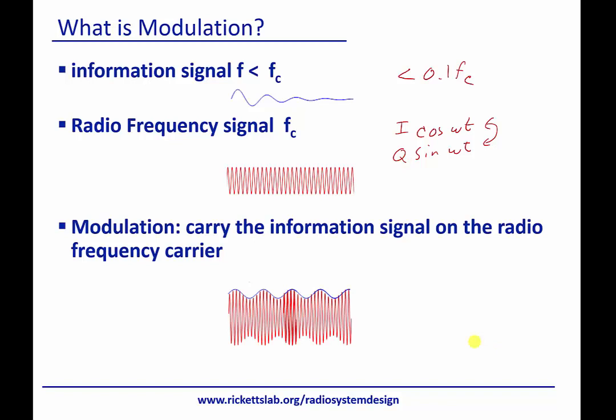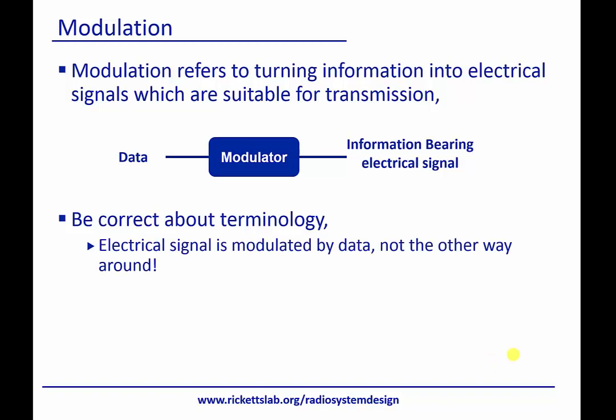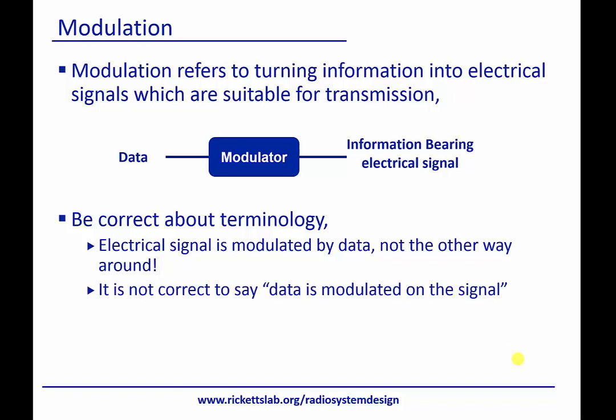The basic idea of modulation is to take a low-frequency information signal and apply it onto a carrier. The carrier enables transmission through the air at the desired frequency, carrying with it the information we wish to convey. In terms of terminology: an electrical signal is modulated by data — not the other way around. Students sometimes say 'the data is modulated on the signal,' but it's actually the signal that gets modulated by the data.